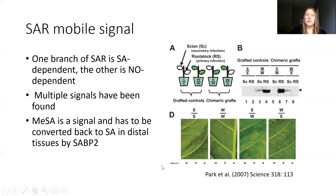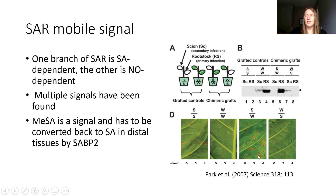This experiment proves that point: when you have the knockout for SA-BP2, you see more disease — this is tobacco mosaic virus. Normally when you prime with salicylic acid at the primary infection site, you see no disease in the secondary infection site, which is the wild type. But when you knock out that gene, you see more infection in the secondary infection site. This shows you need that enzyme in the secondary infection site for effective SAR.